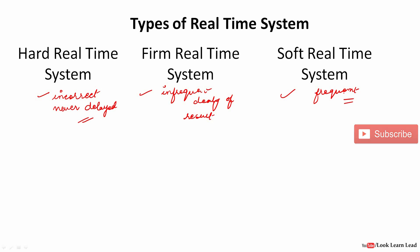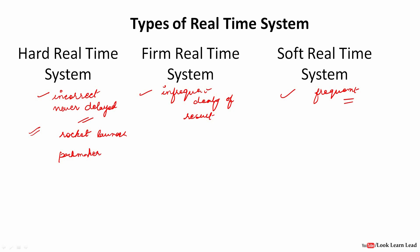An example of a hard real-time system is a rocket launcher — everything must be done within microseconds. As soon as the trigger is activated, the rocket must be launched. Other examples include a pacemaker, which regulates a patient's heartbeat and must operate on time, and nuclear systems. In all these, a missed deadline results in system failure and dangerous changes to the environment.